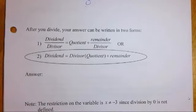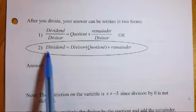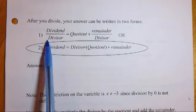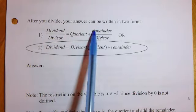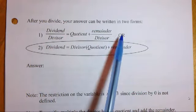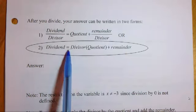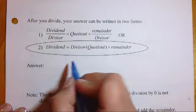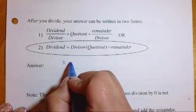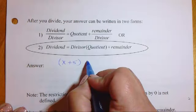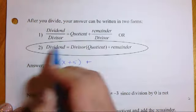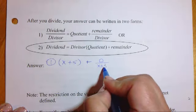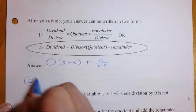So just so you have it here, your answer can be written in a couple of different forms. Your dividend over your divisor, and that's equal to your quotient plus the remainder over the divisor. Or the dividend is equal to the divisor times the quotient plus the remainder. So you could write it in either one of these two ways. So you've got your x plus 5 plus, so this is the first way, plus your remainder, which is 0 over x plus 3.